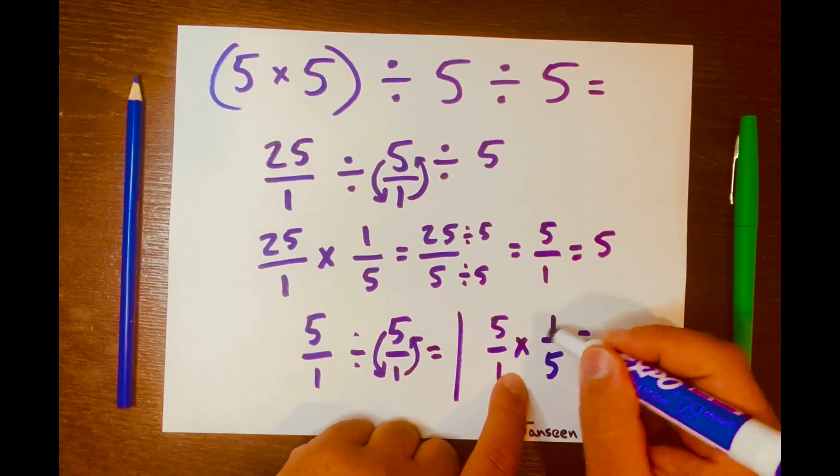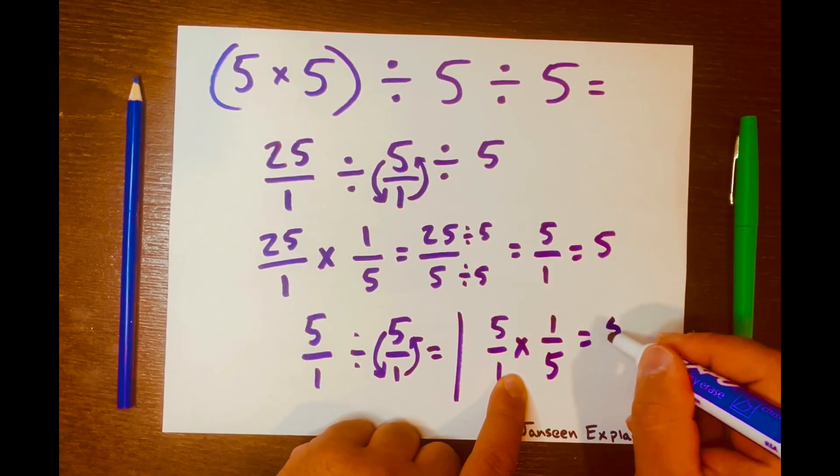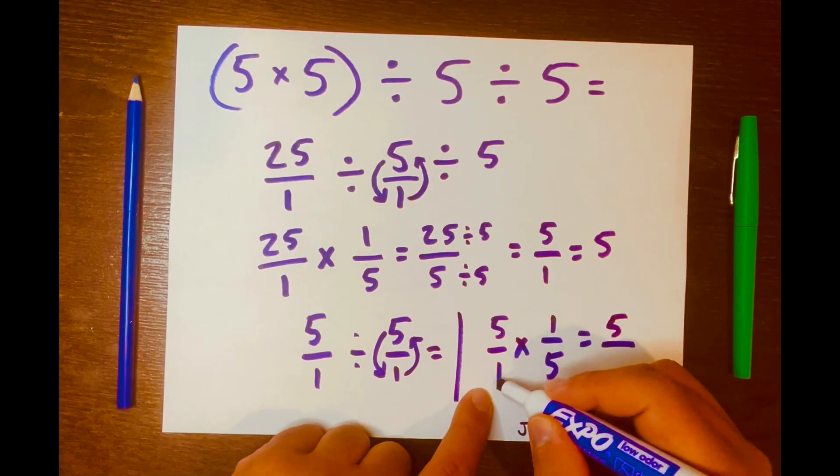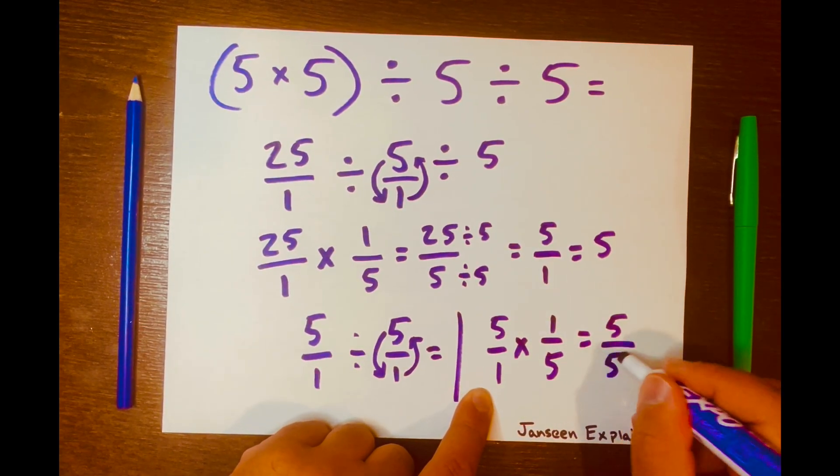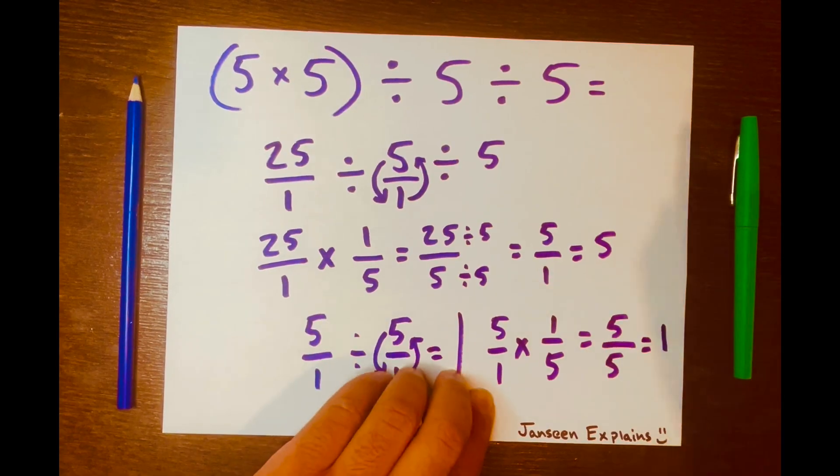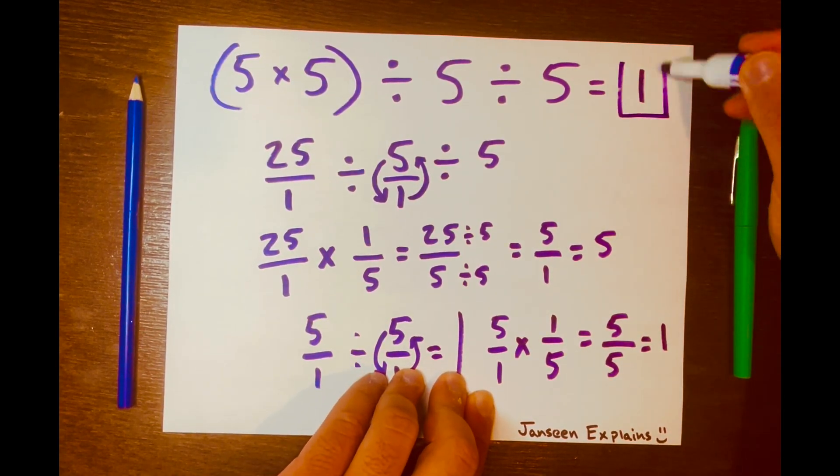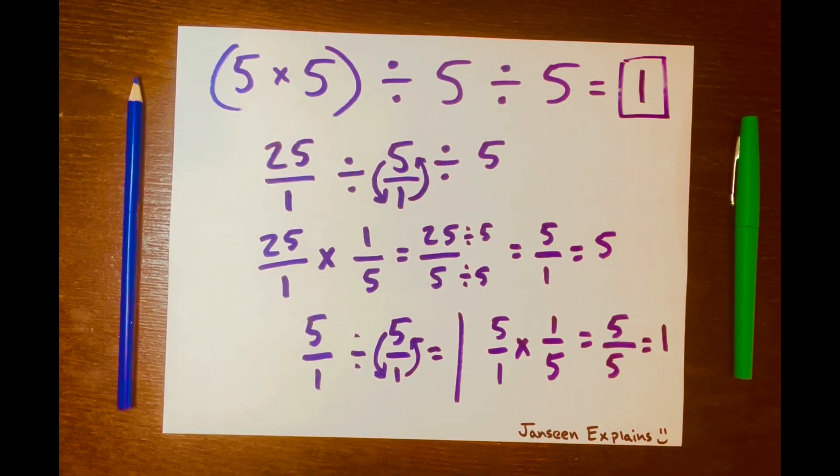And so 5 times 1 is 5, over 1 times 5 is 5. And so 5 over 5 equals 1. So your answer is 1, and there you go.